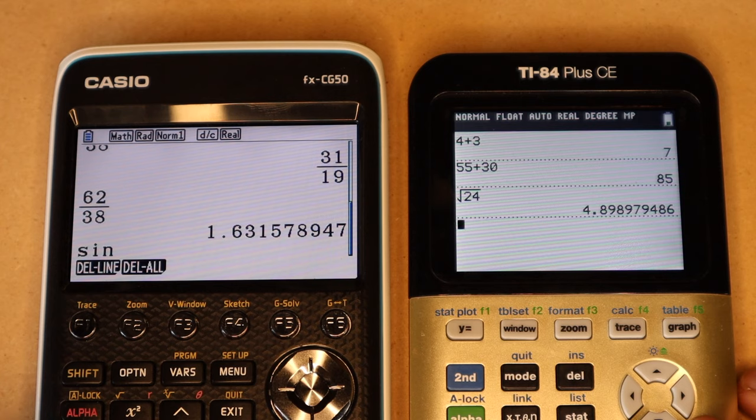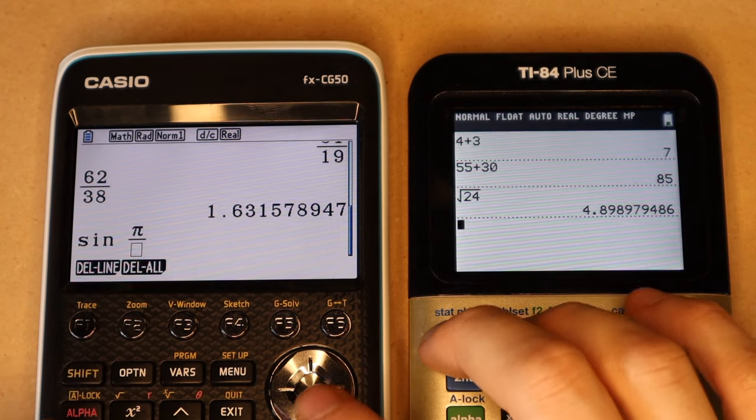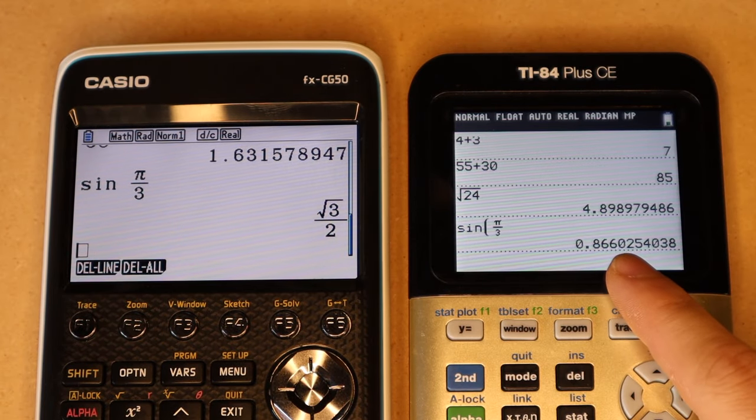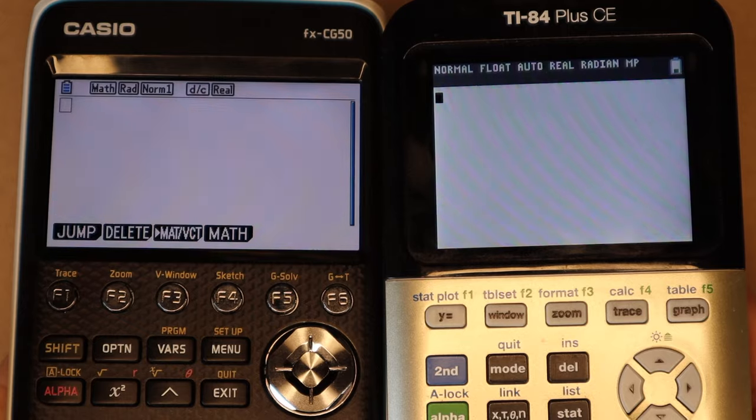And this also works with a lot of common trig functions. So for example, sine of pi over 3, I will get the square root of 3 over 2, rather than just a decimal approximation like I get on the TI-84 Plus CE.